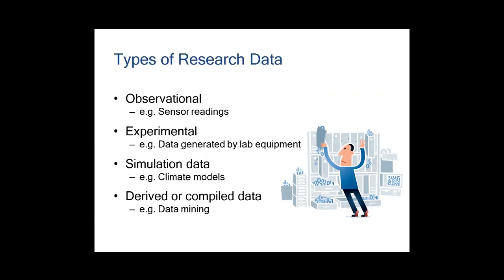There are different kinds of research data. Observational data could be sensor readings or survey results. Experimental data is much more prevalent in the sciences and engineering. Simulation data — people across disciplines create models for forecasting. Derived or compiled data is data mining; the HathiTrust example illustrates how you would do a data mining project. Any given project could include all of these different types of research data, but it's important to understand the distinction because the way you manage data depends on the type of data you're trying to manage.